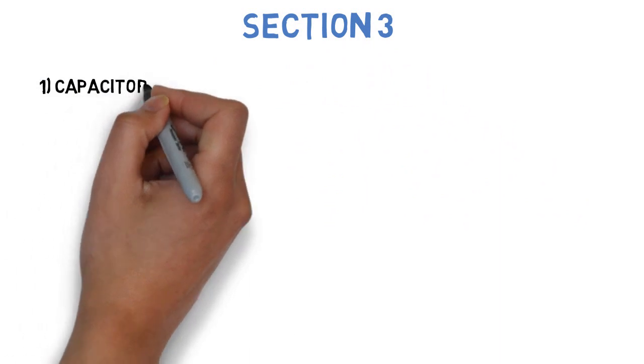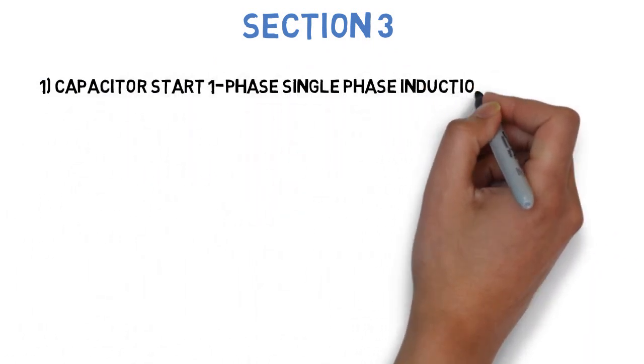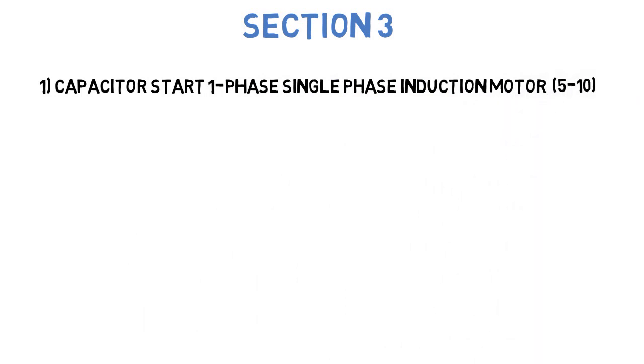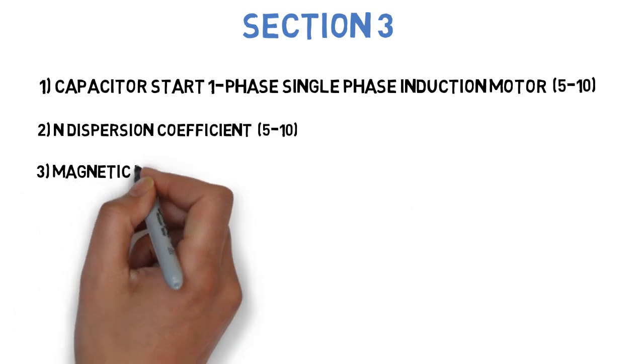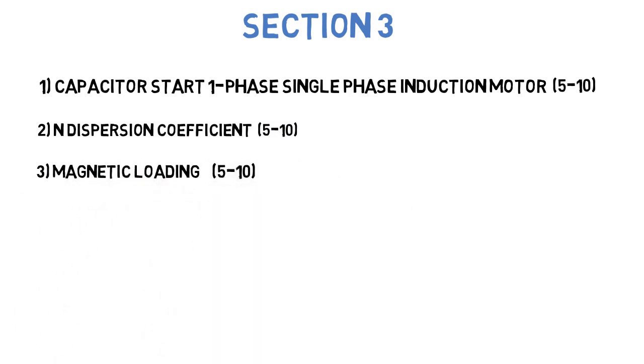Let's go to section three. The first question is explain capacitor start single phase induction motor. This can come for 5-10 marks. Next question is explain dispersion coefficient. This can come for 5-10 marks. Next question is what is the significance of magnetic loading. This can come for 5-10 marks.